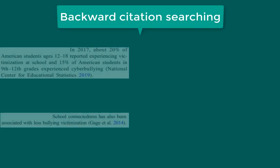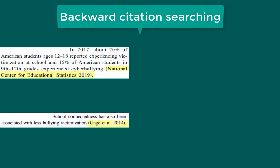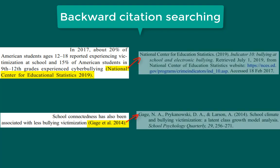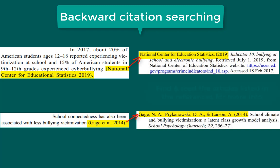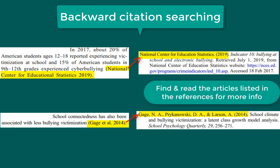When you're reading, look at the in-text citations to see the source of the information being discussed. The in-text citations correspond to full citations at the end of the paper, which provide the publication information. If you find a helpful resource for your topic, you can look at the sources cited in that resource to see where the authors got their information.